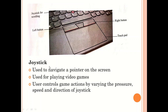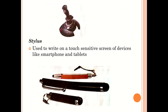The joystick is used to navigate the pointer on the screen. It is mainly used for playing videos and games. For those who have been on PlayStations, a joystick is one of the devices mainly used to move objects on your screen. You use this device to control game actions by varying the pressure, speed, and position of the joystick — for example, to move a player faster or in a certain direction.